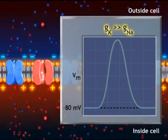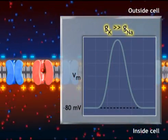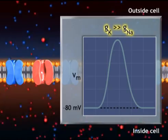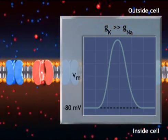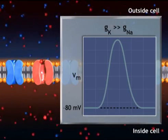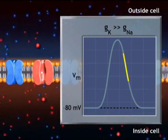Now, potassium conductance exceeds sodium conductance. Potassium efflux takes the membrane potential back toward the equilibrium potential for potassium. This represents the falling phase of the action potential.